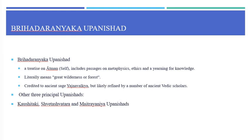The Shvetashvatara Upanishad is embedded in the Yajur Veda and is part of the Black Yajur Veda or the Krishna Yajur Veda. The term 'Black' implies an unarranged, motley collection of content in the Yajur Veda, in contrast to the White or well-arranged Yajur Veda, also known as Shukla Yajur Veda.